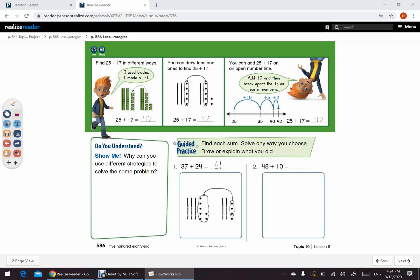In question number 1, they have used drawing 10's and 1's. As you can see, 37 plus 24. We have 3 10's and 7 1's. 2 10's and 4 1's. So, we have to make a 10. So, we have 6 10's in all, and 1 remaining. So, 61.